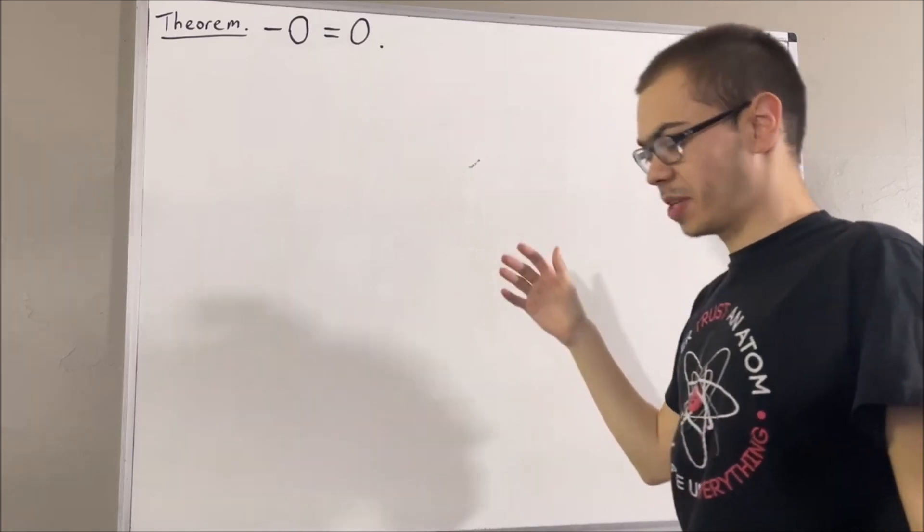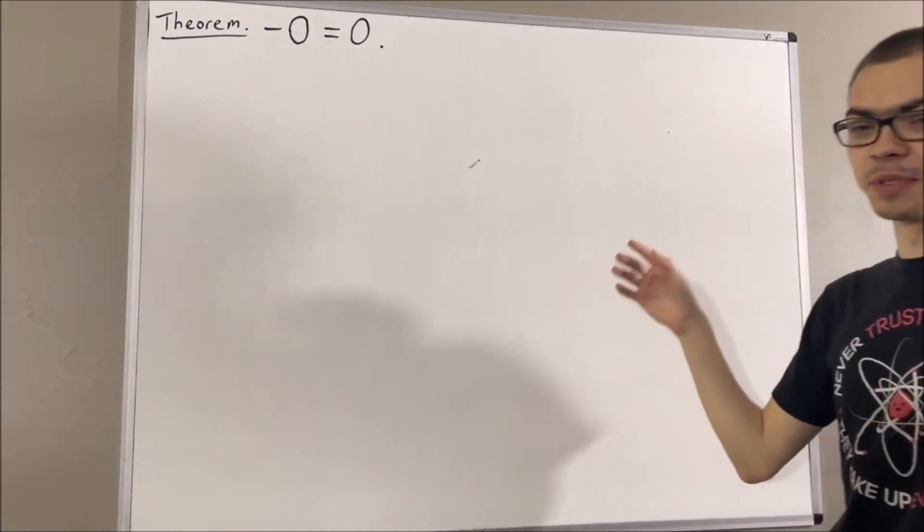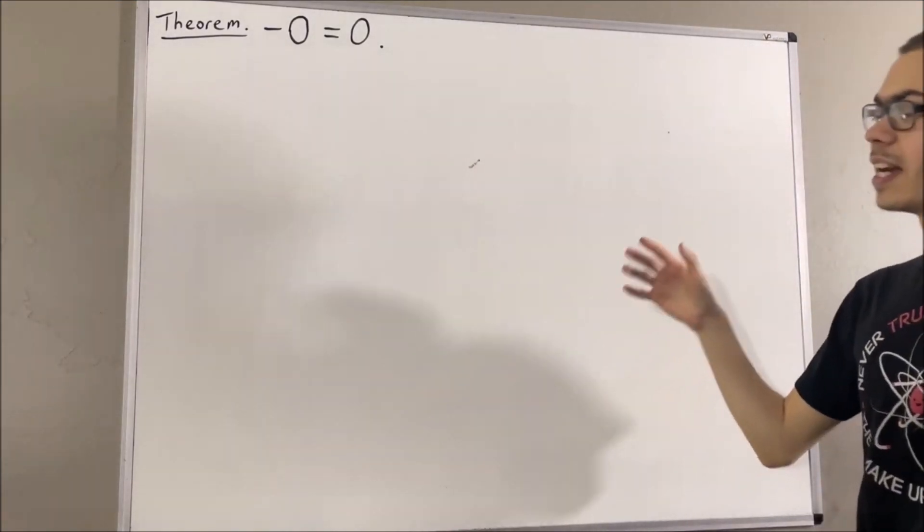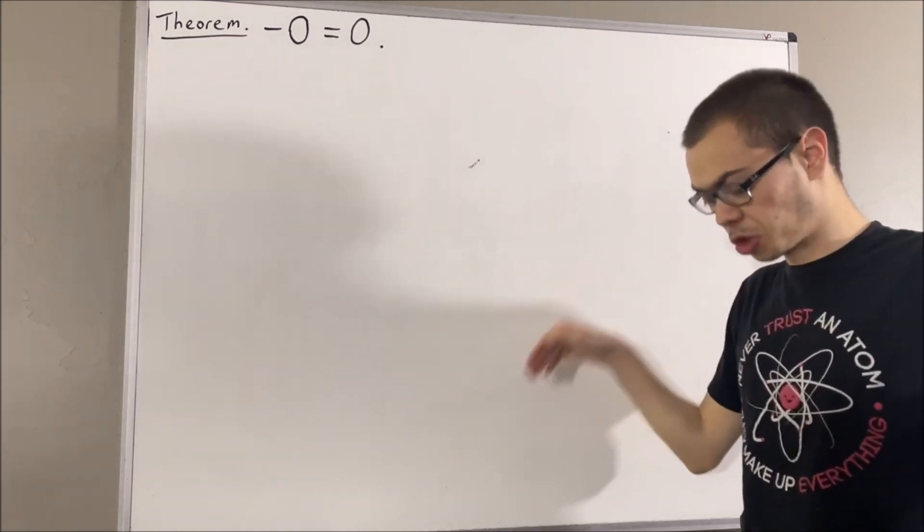Now, in this series, we are using a list of ten axioms for the real number system. And I'll leave that list of axioms in the description of the video below.